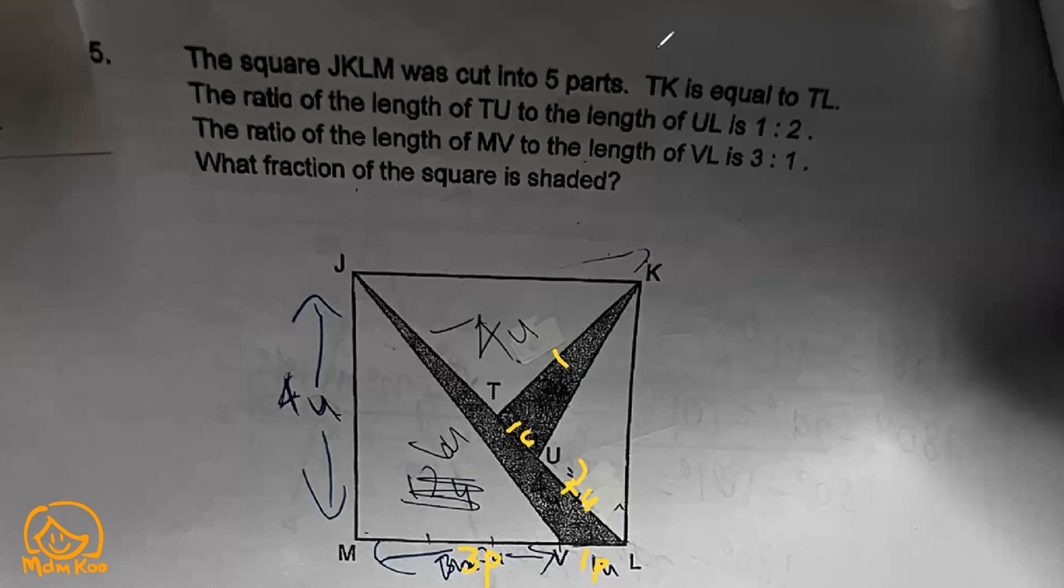First we look at this part. This part here is one third of this entire part. This is 1 to 2, which means this is actually one third of the base of the entire quarter triangle.